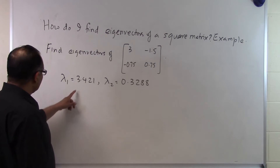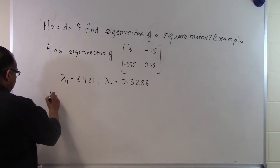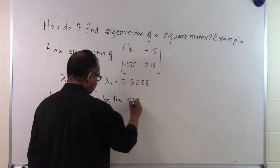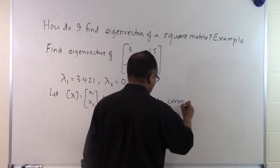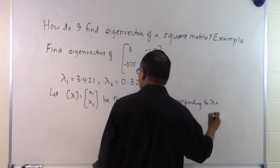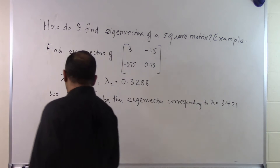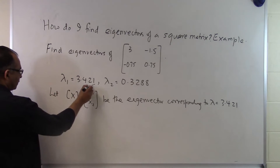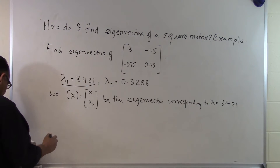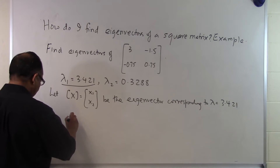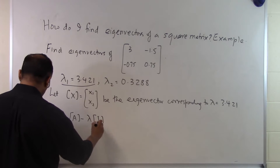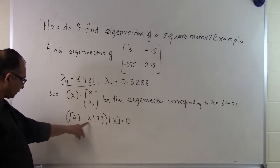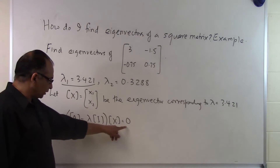We already know from the definition of eigenvalues that A minus lambda I times X is equal to 0. So if lambda is the eigenvalue of A, then if we subtract lambda times the identity matrix from A and multiply by the eigenvector, it has to give us 0. Let this column vector be the eigenvector corresponding to lambda equal to 3.421.